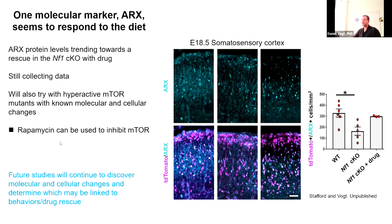Other things we can do are try the same strategy using rapamycin to inhibit the mTOR pathway in our hyperactive mTOR mutants, looking for markers that are changed to see if they correlate with any behavioral change. Our future studies are really trying to repurpose FDA-approved drugs to understand if these molecular markers correlate with behaviors.